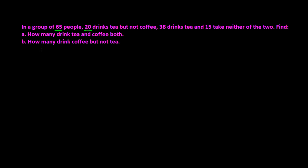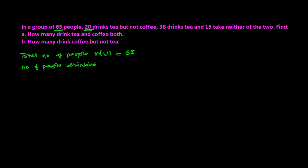So first, I'm writing the given information. Total number of people — that is my universal set U — is 65. Next, 20 people drink tea but not coffee. That means the number of people drinking tea but not coffee, which is T difference C (where coffee is represented by C), is 20.